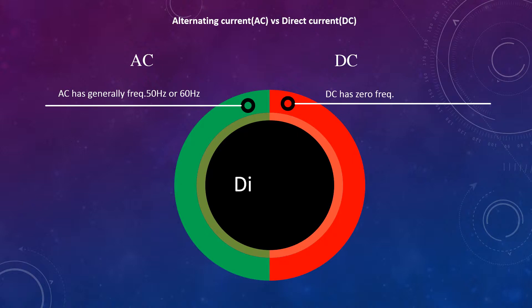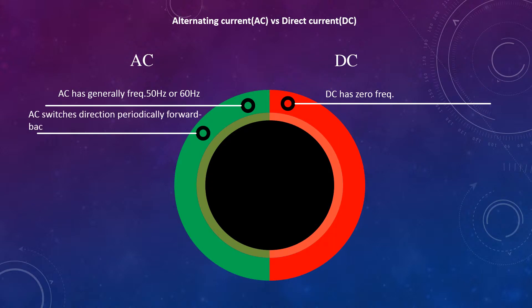Direction: AC switches direction periodically, forward and backward. DC flows in a single direction.